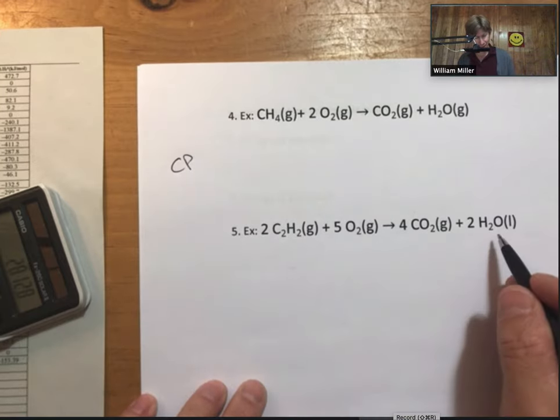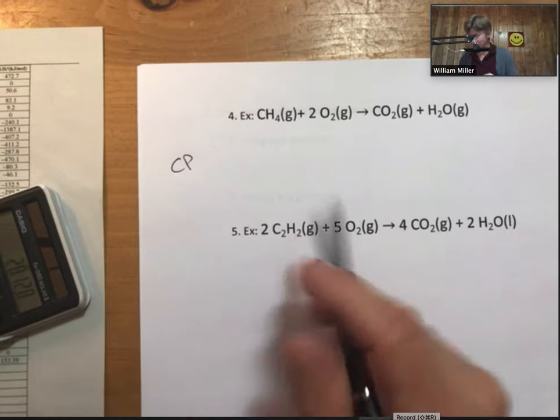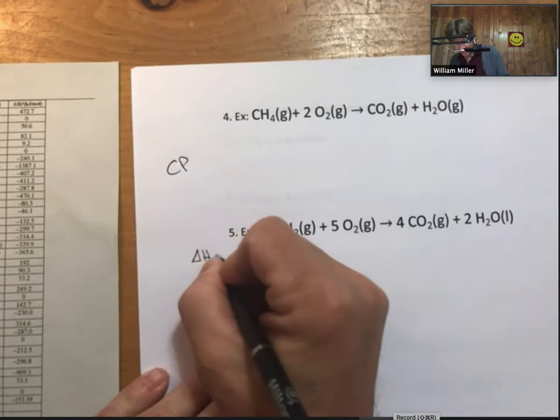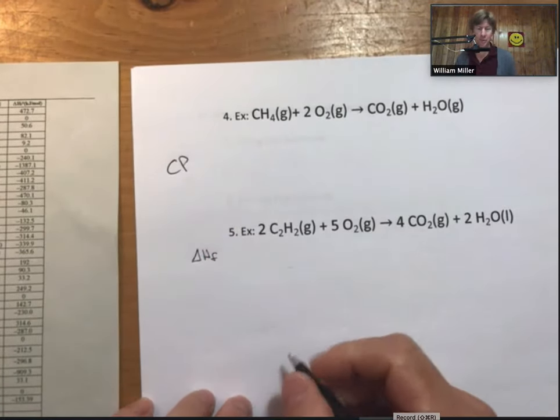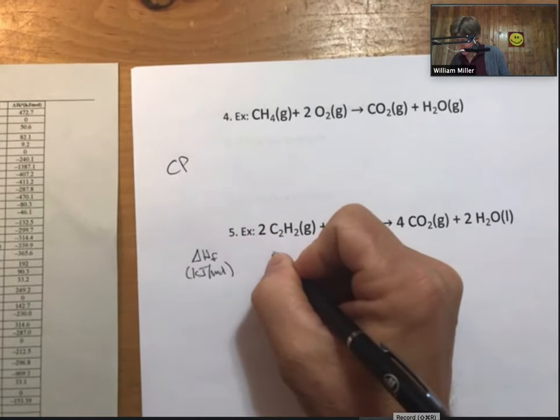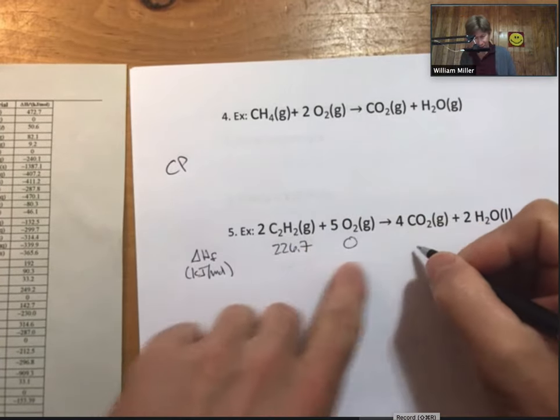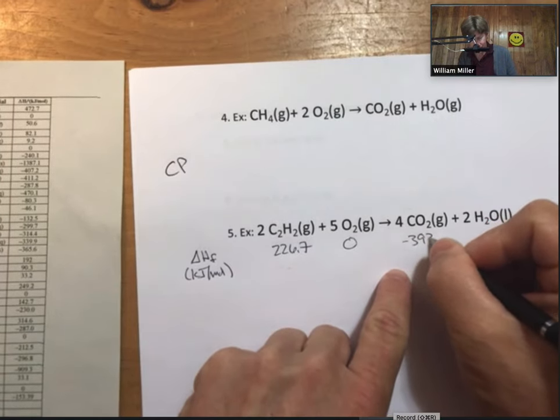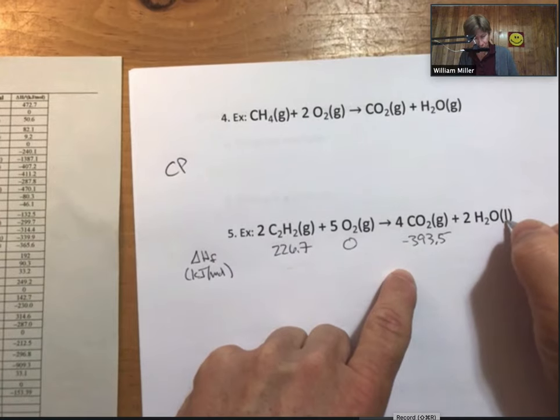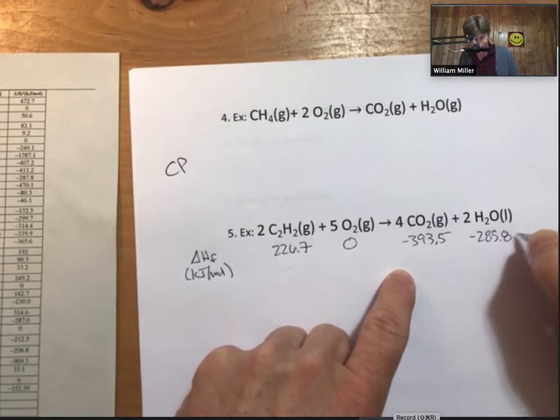Let's do this one here. It's another combustion reaction, this time for acetylene, C2H2. Let's go to my list, C2H2. Looking up delta H formation values in kilojoules per mole. I have 226.7. Oxygen's just zero. Carbon dioxide. And liquid water here.